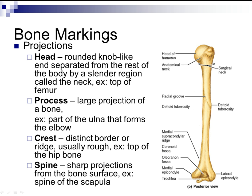A process is a large projection of the bone — for example, the ulna that forms the elbow, the part sometimes called the funny bone. A crest is a distinct border or ridge, usually rough — for example, the top of the hip bone. A spine is a sharp projection from the bone surface — for example, the spine of the scapula, or shoulder blade.